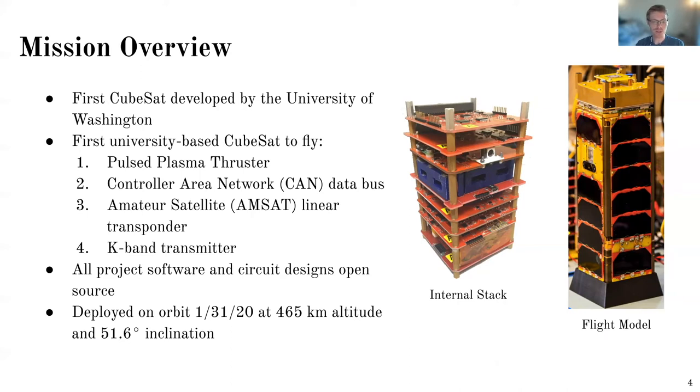So this first CubeSat developed here was quite ambitious for a CubeSat in general, but especially for our first CubeSat from a university. So we had a pulse plasma thruster that was developed in-house. We implemented the CAN data bus, which is originally from the automotive world. We partnered with the AMSAT group, and they provided us a linear transponder radio to incorporate onto our satellite.